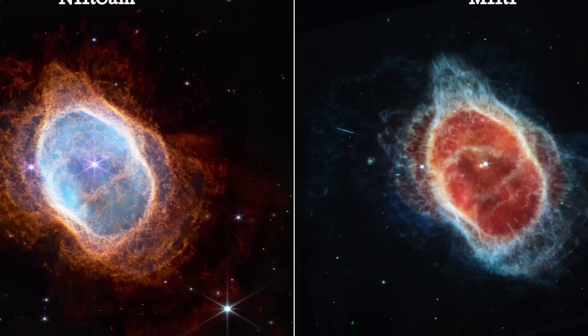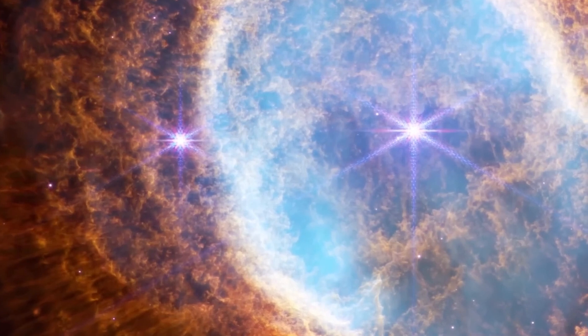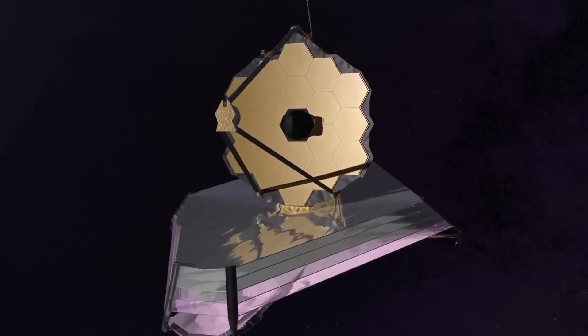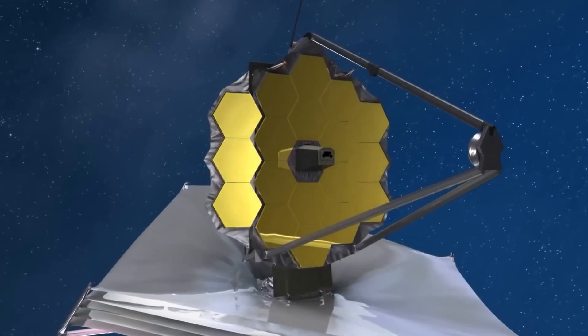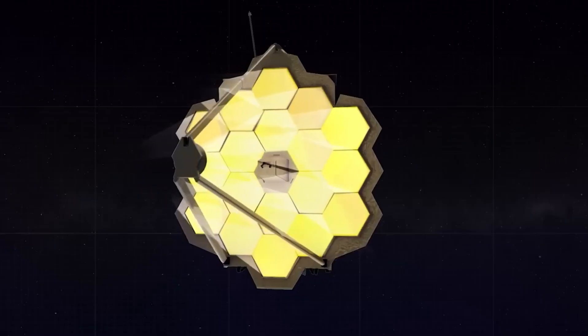Light pollution doesn't only affect us here on Earth, but the telescopes in space as well. If any other telescope were to look at this bright star, the light from this star would drown out everything else in the image. But not for Webb.